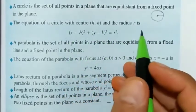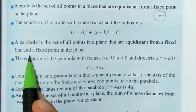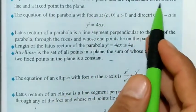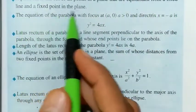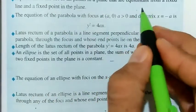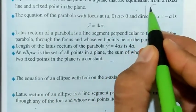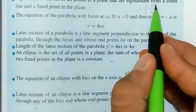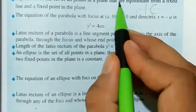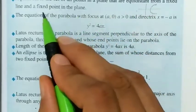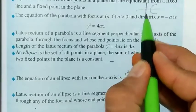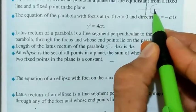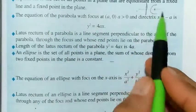Now, the parabola. A parabola is the set of all points in a plane that are equidistant from a fixed line and a fixed point in the plane. As you can see here, this is the parabola — all these points in the plane are equidistant from a fixed line (the directrix) and the fixed point (the focus).